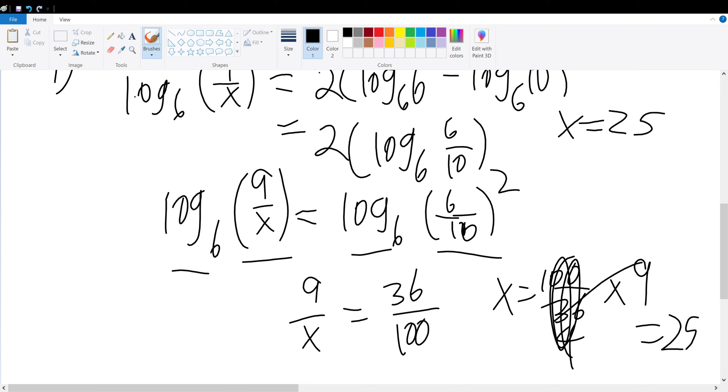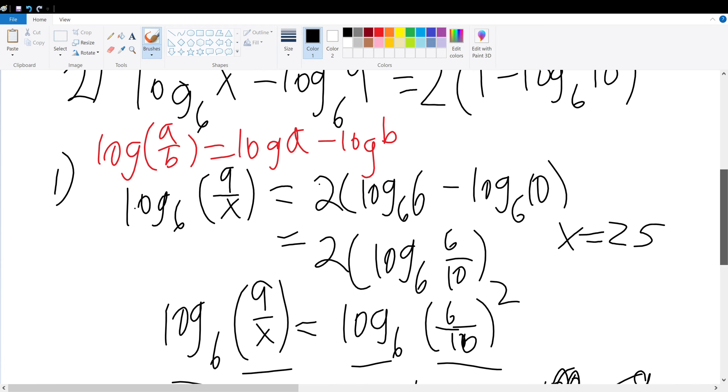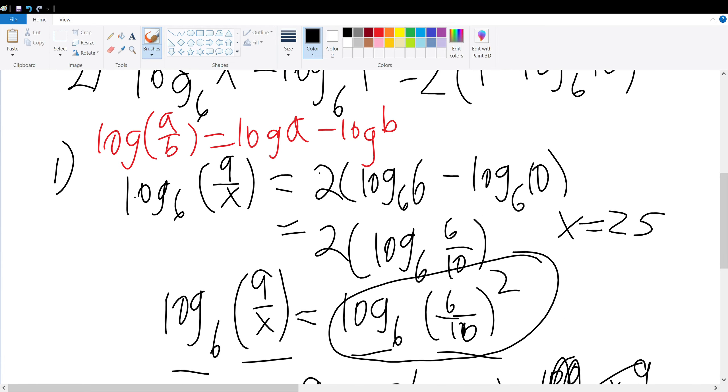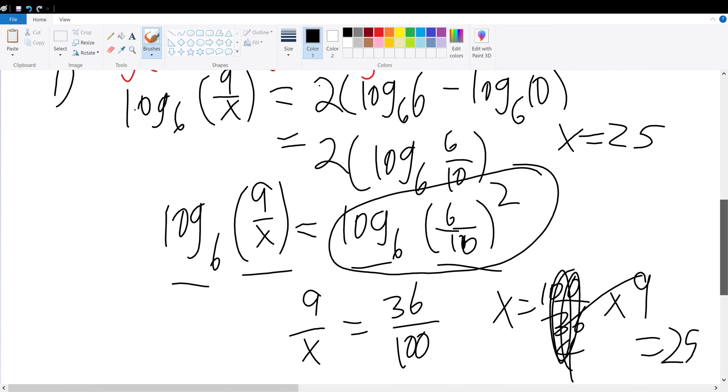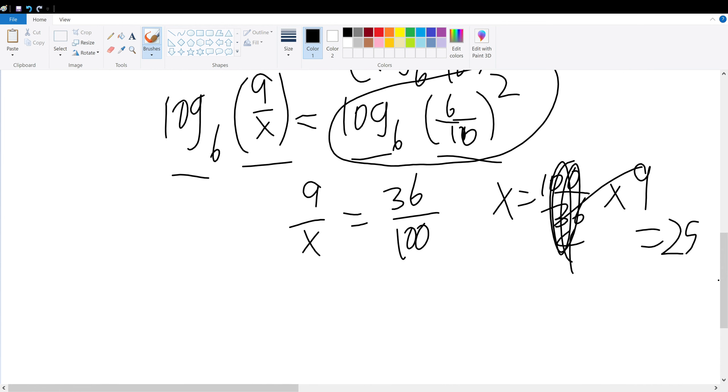Now, what about case 2? Case 2, the right-hand side of log base 6 of 6 over 10 squared is still the same. It's just that this time, it's x over 9 instead of 9 over x. So x over 9 now goes here. Therefore, x will be equal to 36 over 100 times 9.